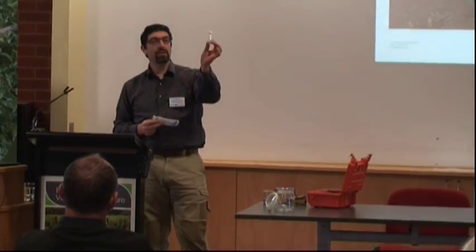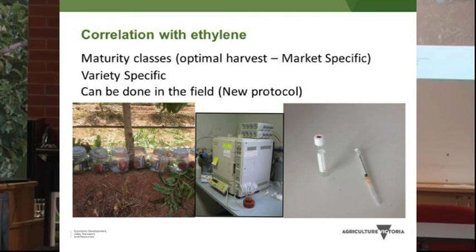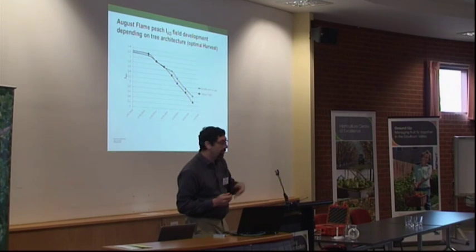We put the fruit into a jar in the field, leave it for a certain time in the shade, and collect the gas into small evacuated vials using a normal syringe. Later we put it in the gas chromatograph to measure ethylene. This uncoupling is fundamental for starting systematic understanding and systematic measurements of different varieties and their maturity classes.